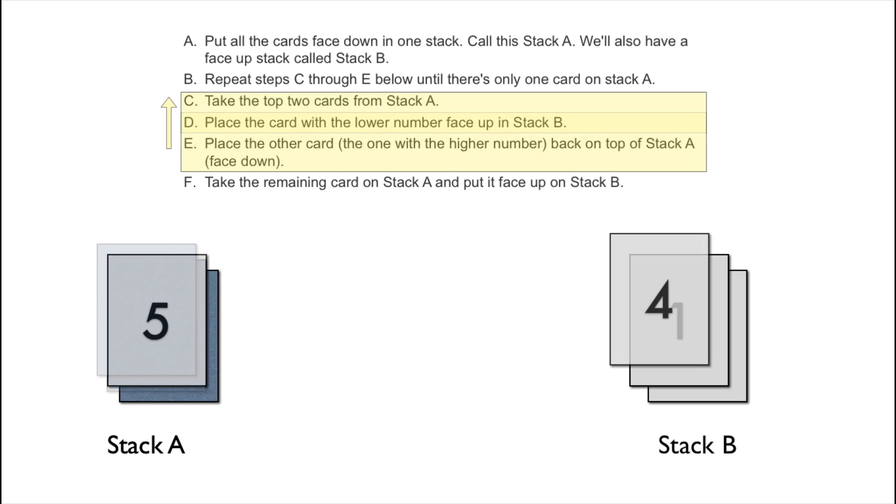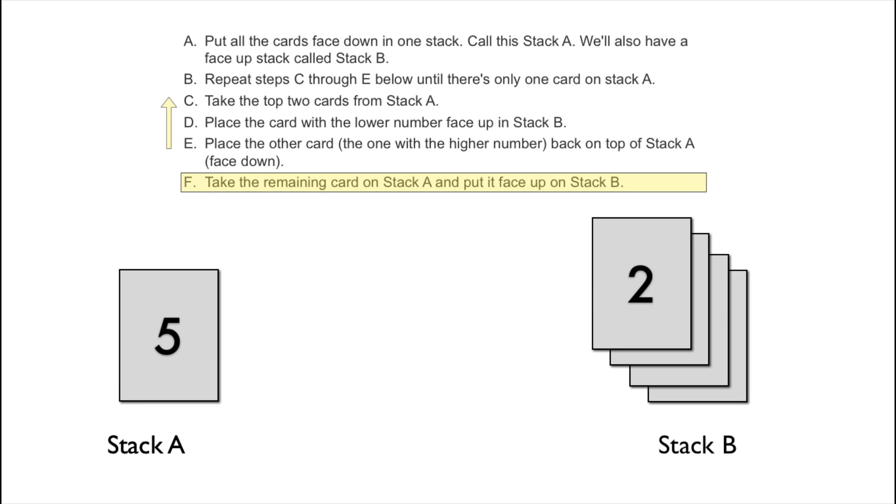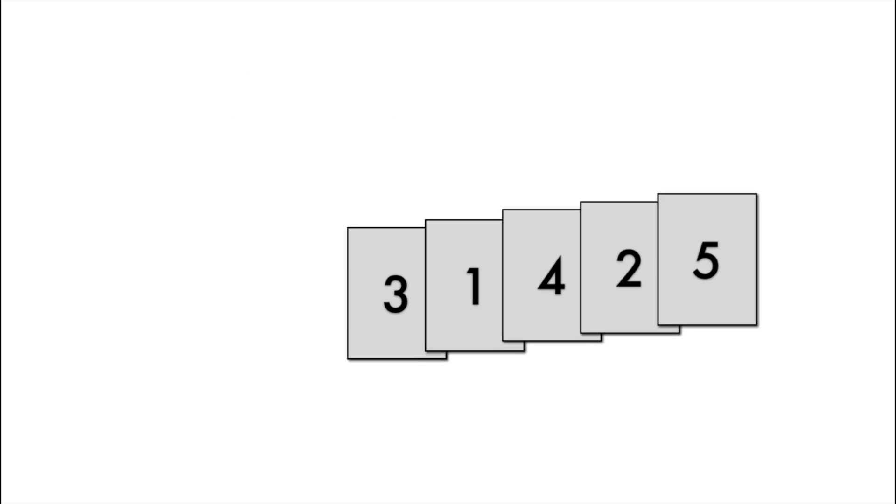Then we can go ahead and repeat this and we'll find that we have Stack B with four on it next, and then two on it next, and then finally when we take the remaining card on Stack A and put it on Stack B, we end up with five over there. And if we look at the order, this is what the assignment says it should be.